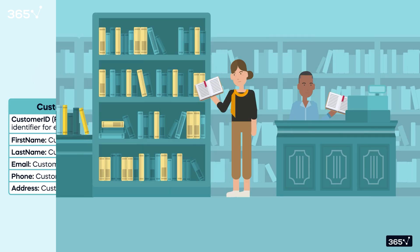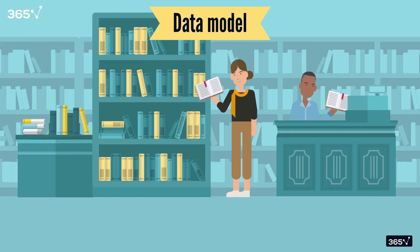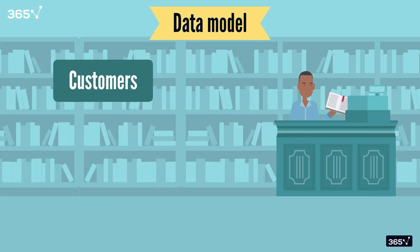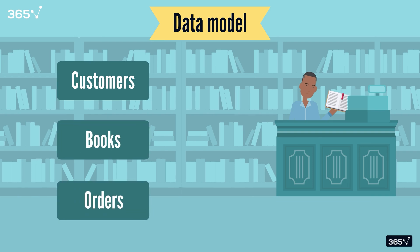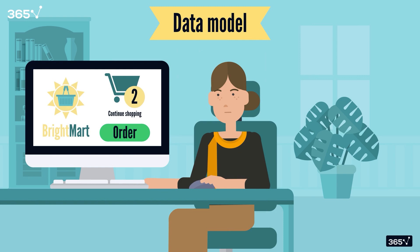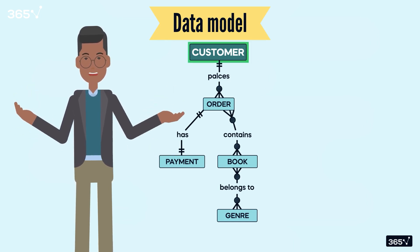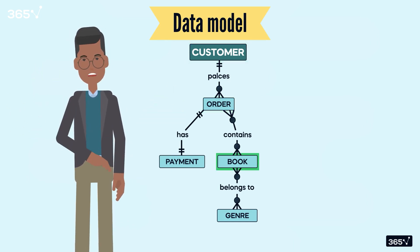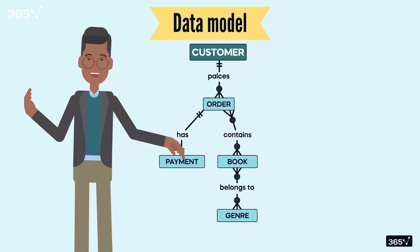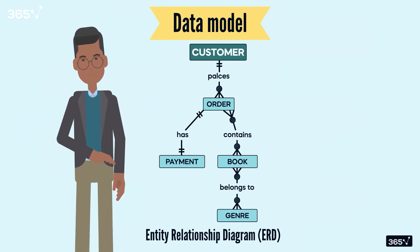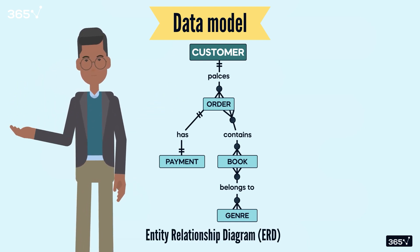For example, imagine a simple e-commerce store. The store has some key components like customers, books, and orders. Data modeling will help define how these individual data sources will be stored and also explain the relationship between these components. For instance, a customer will place an order that will consist of one or more products. This basic data model shows customers, orders, and products as entities and how they interact. This diagram is called an entity-relationship diagram, referred to as an ERD.